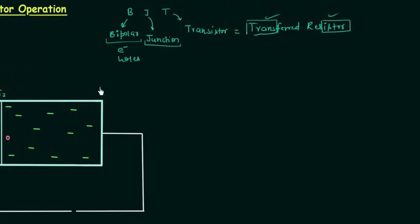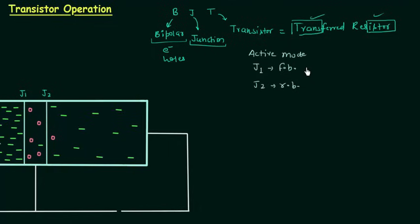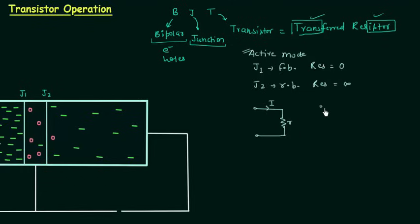What is the meaning of transferred resistor? In active mode of operation, junction J1 is forward biased and junction J2 is reverse biased. When junction J1 is forward biased it offers very low resistance, ideally zero. When junction J2 is reverse biased it offers very high resistance, ideally infinity. If the same current I flows, it initially flows through a low resistance and at the output flows through a high resistance capital R. So somehow we have transferred the low resistance to the high resistance — that's why we have the name transferred resistor, and from this we get transistor.